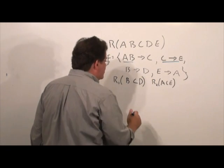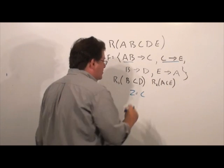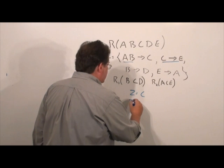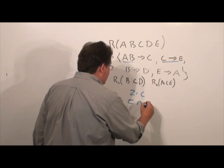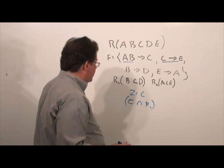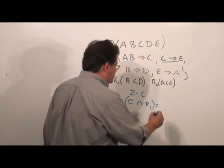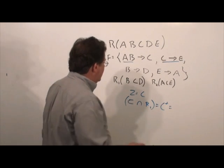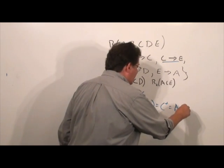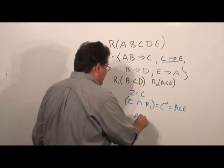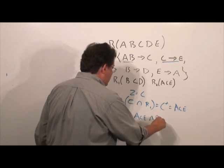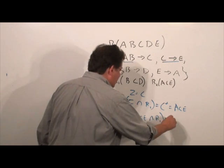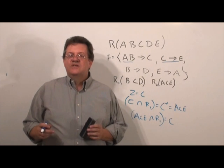Let's do C function determines E. So, the Z starts equal to the left-hand side, which is C. We do, in this case, C intersect R1. And what is C intersect R1? Just C. We figure C closure. What is C closure? CE, A. So, we have ACE. We do ACE intersect R1. What does that give us? Nothing, just the C. So, Z is still equal to C.